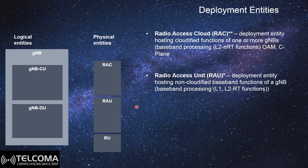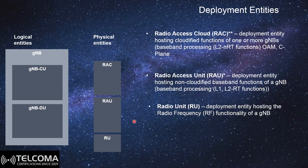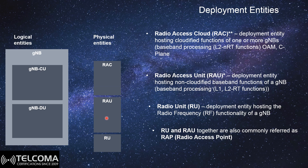The non-real-time functions are held on the Radio Access Cloud, while real-time functions are held on the Radio Access Unit. The Radio Unit is the deployment entity hosting the radio frequency functions of the gNodeB. To summarize: the Radio Access Cloud handles Layer 2 and upper-layer non-real-time functions in a cloudified manner; the Radio Access Unit handles Layer 1 and Layer 2 real-time baseband functions; and the Radio Unit handles all radio frequency functioning. The Radio Access Unit and Radio Unit are associated with the Distributed Unit, while the Radio Access Cloud corresponds to the Central Unit. Together, the Radio Access Unit and Radio Unit are commonly referred to as a Radio Access Point.